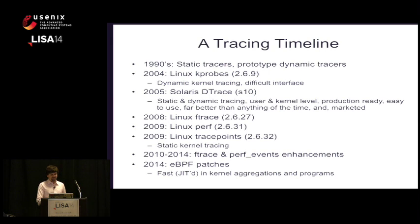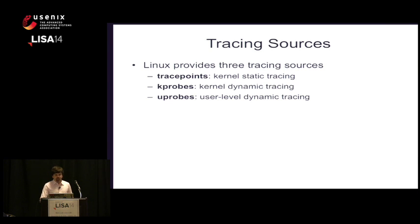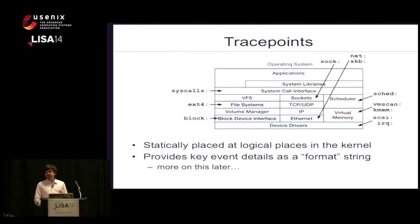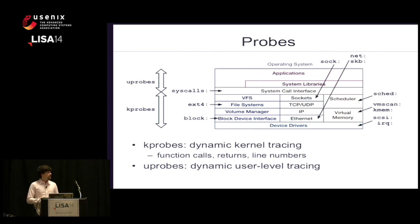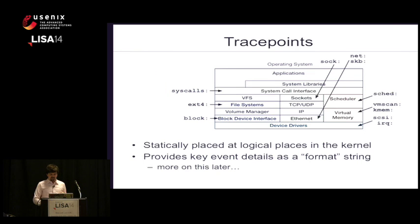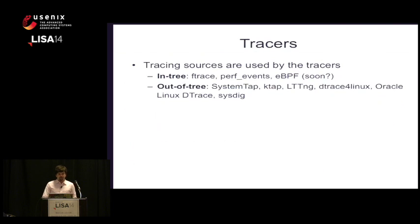Linux provides three tracing sources: trace points, kprobes, and uprobes. Trace points — for ext4, syscalls, and others — are static tracing, meaning code macros placed into the kernel source code. They provide key event details as a format string. Then there are probes for dynamic tracing: uprobes for user space and kprobes for the kernel. With kprobes you can look at function calls, function returns, and line numbers. It fills in the gaps that static tracing doesn't provide. I try not to use dynamic tracing first because it's an unstable interface, but it's great for when you need it.